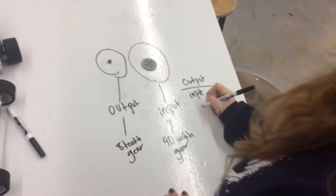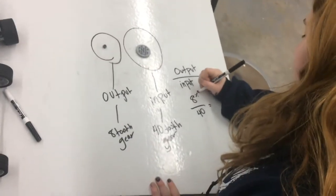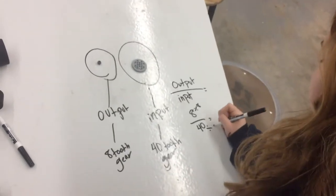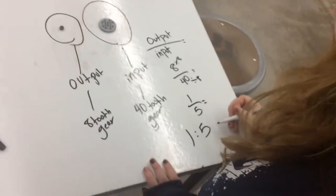That's going to equal 8 over 40, and then we're going to find what common number they have. That is going to be 8. So 8 divided by 8 is 1, and 40 divided by 8 is 5. So that's going to be 1 over 5. Now the ratio is going to be 1 to 5.